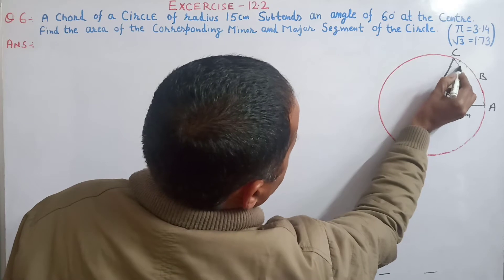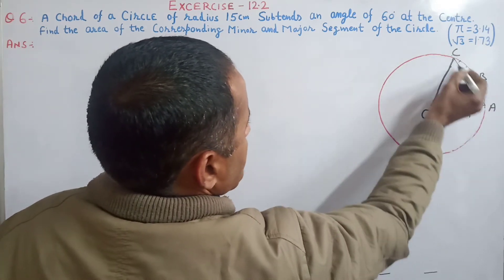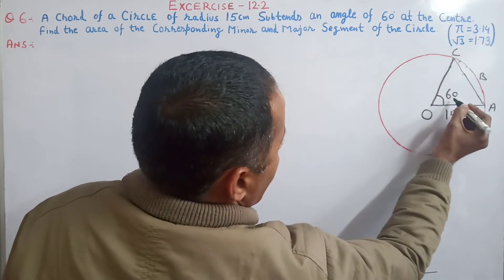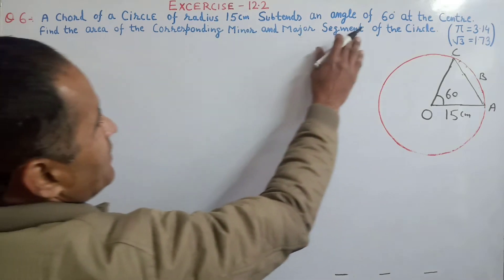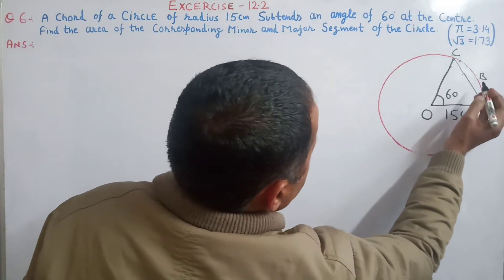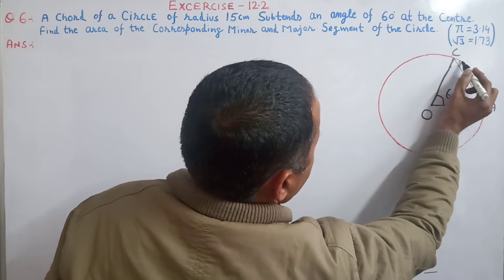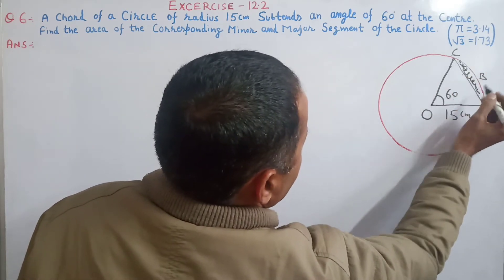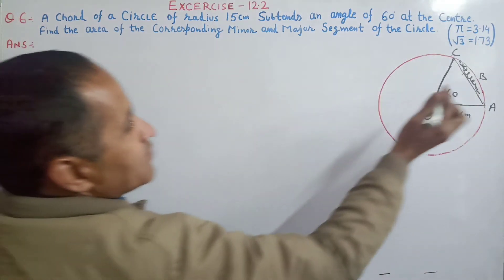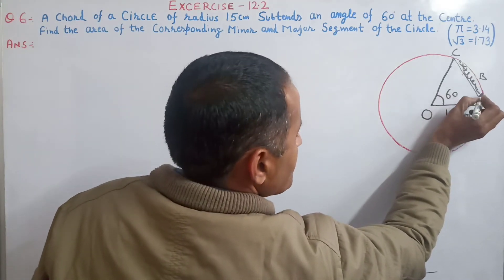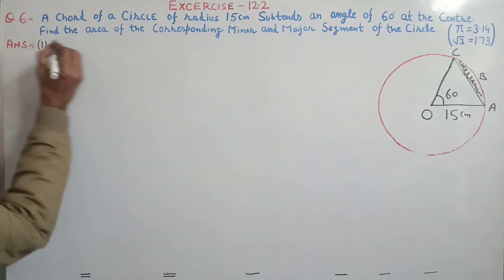Here we have the chord AC. From A, I have a minor segment — this is the shaded area. This area is the major segment — this is the remaining area. First we will find out the area of the minor segment, which is what we have shaded. We write this as number one — number one is the minor segment.